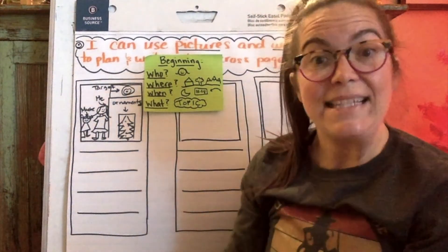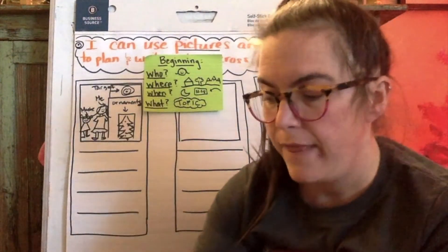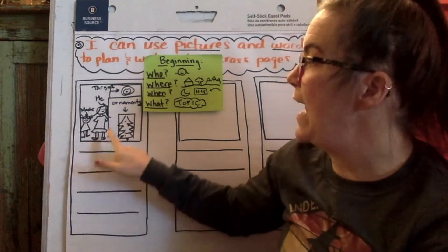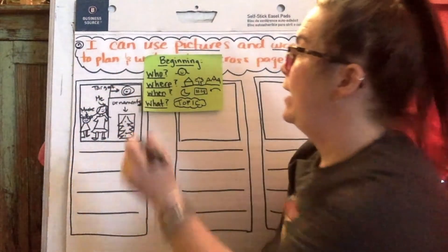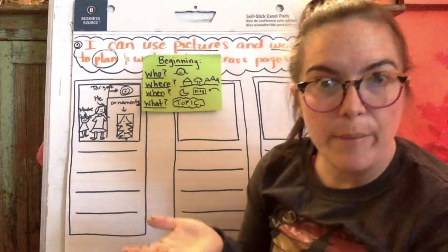So your job is either to get out your writing notebook that your teacher may have sent home, or to open up Seesaw and create the beginning using pictures and words to plan. Right now we're just planning our story. Plan the beginning.